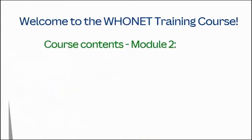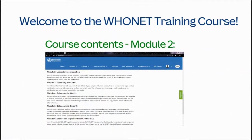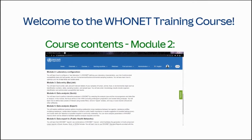Module 2: Laboratory Configuration. You will learn how to configure a new laboratory in HUNET, defining your laboratory characteristics, your list of antimicrobial susceptibility tests and test panels, and your human, animal, food, and environmental sampling locations. You will also learn how to optimize your list of data fields and isolate alerts.